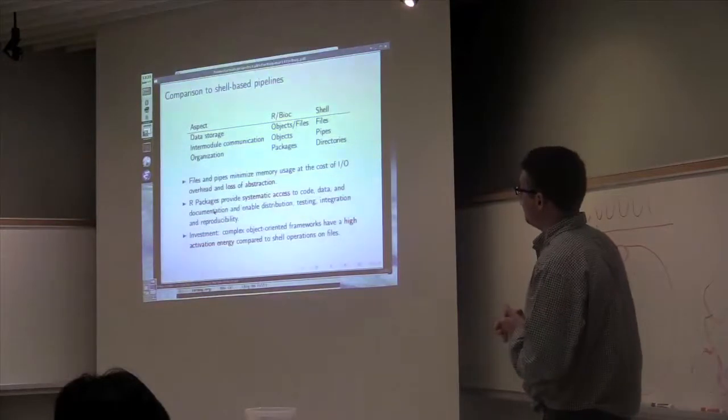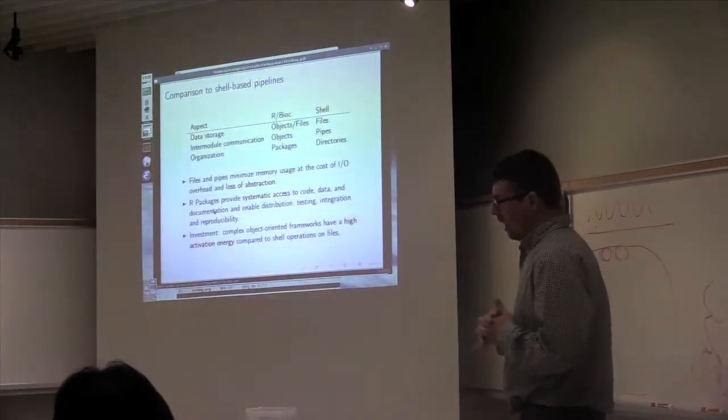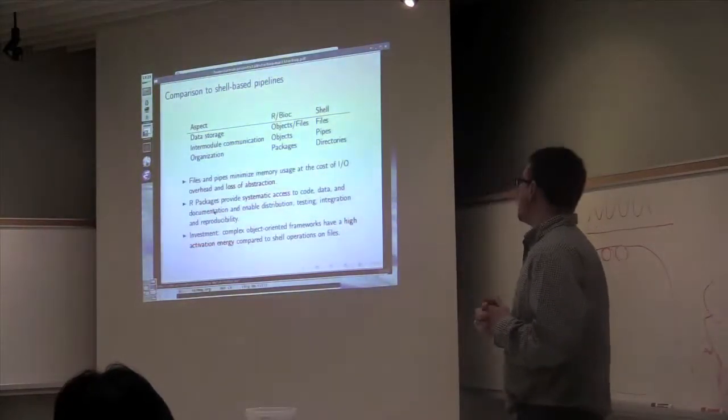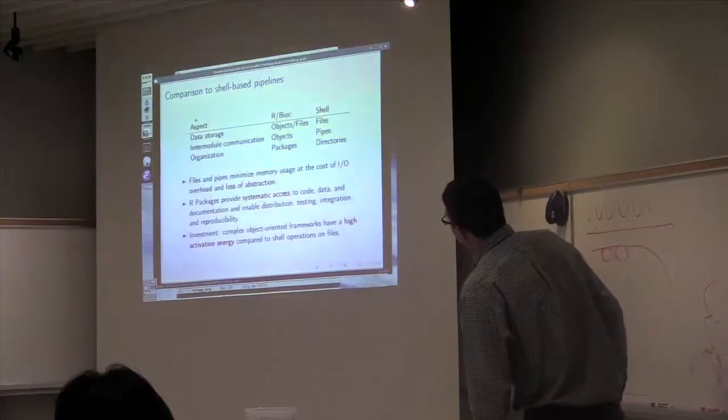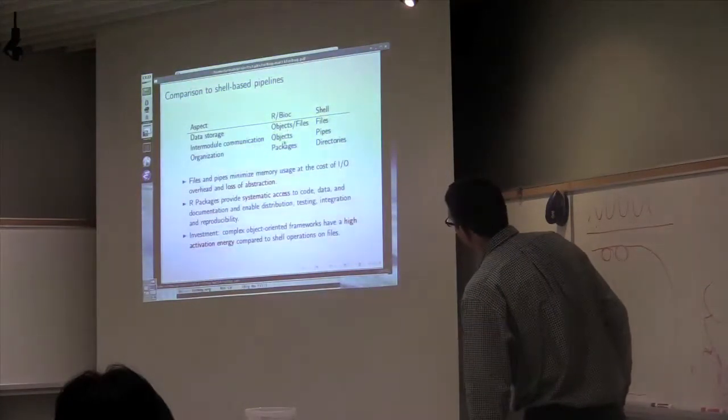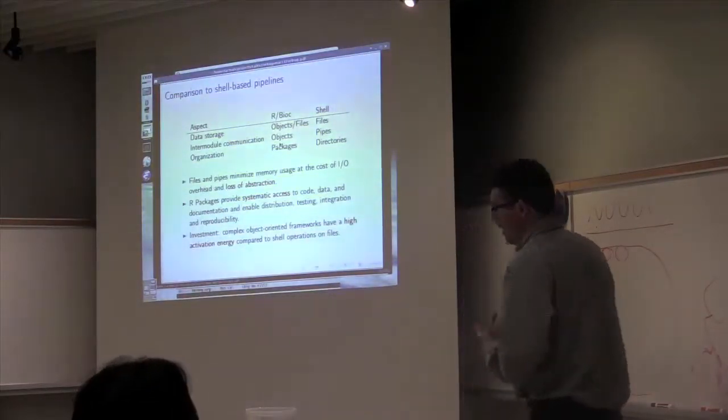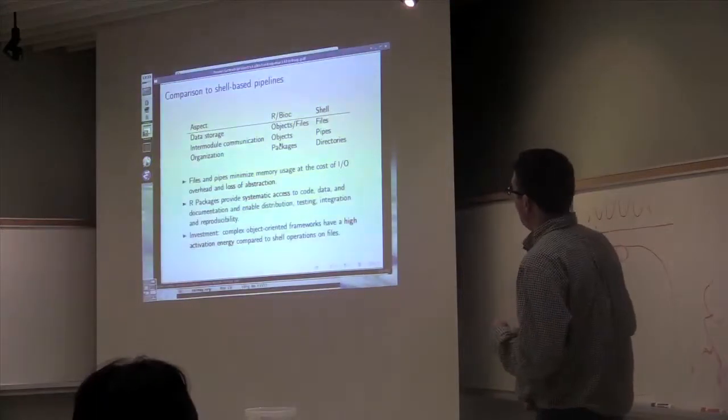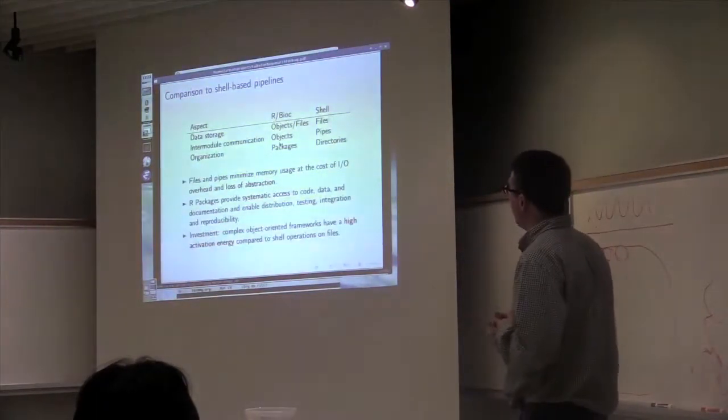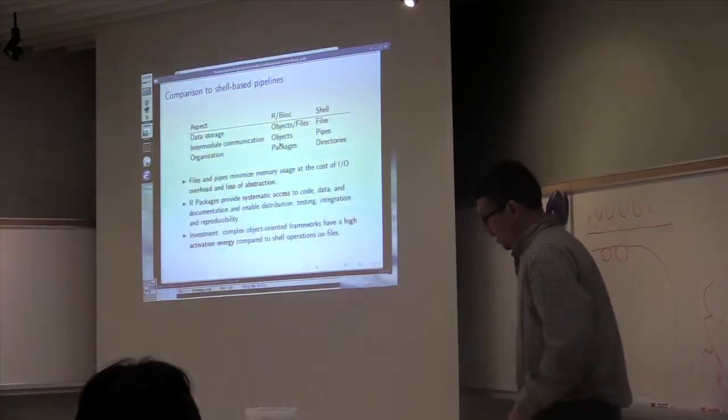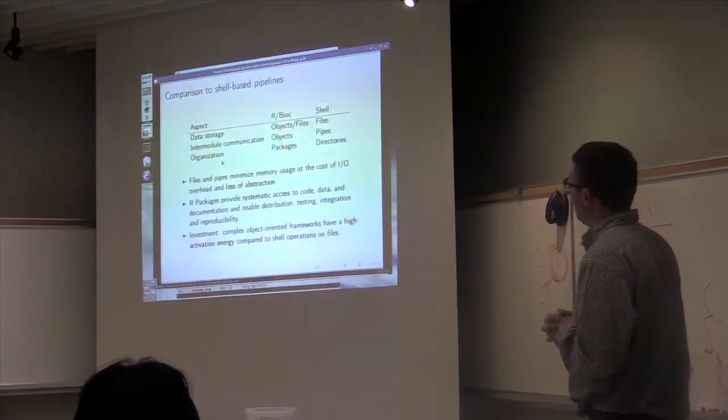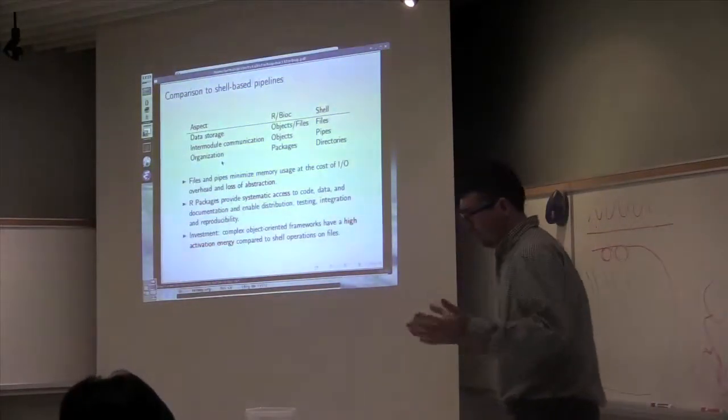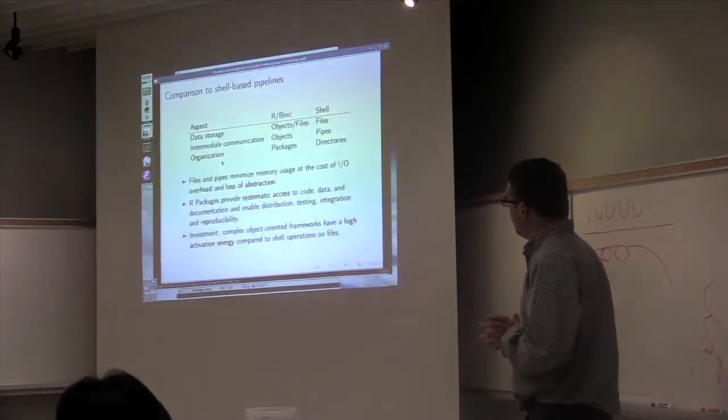If you compare this to shell-based pipelines that are commonly employed, where there's a command line program executed on a file and then perhaps pipes into another program and eventually writes something out to the file system again. In Bioconductor, our data are stored mostly as objects in the workspace, and we pass data between modules as objects. Whereas in the shell, there are files and pipes. You rely on the shell and the file system for communication. The other main difference is organization. In R, we have these packages that allow us to systematically organize all of our work. Whereas in the shell, directories are there for organization, but that's a fairly low-level mechanism.